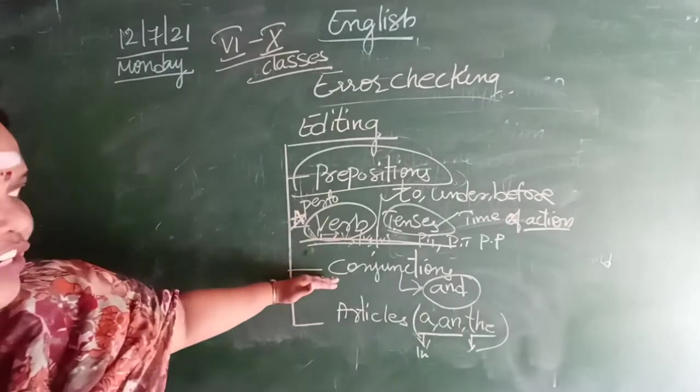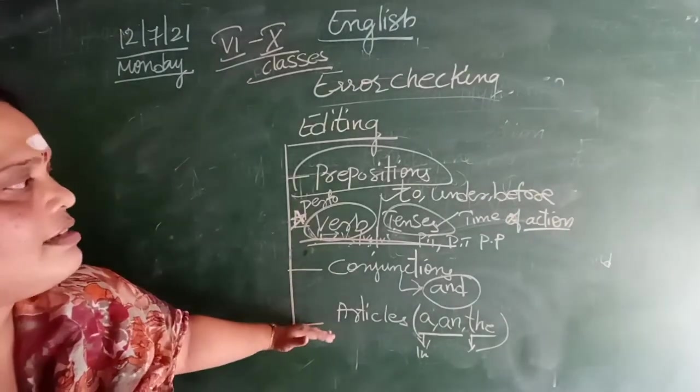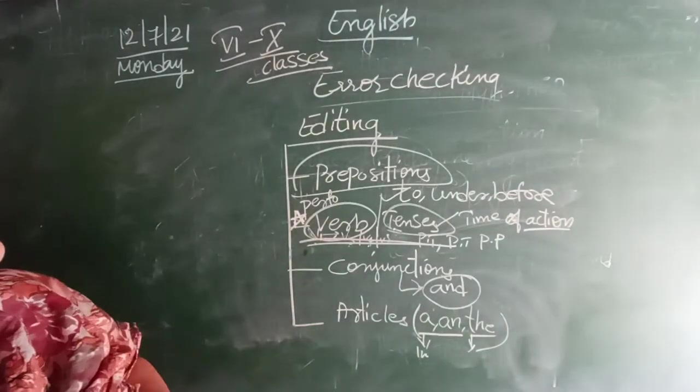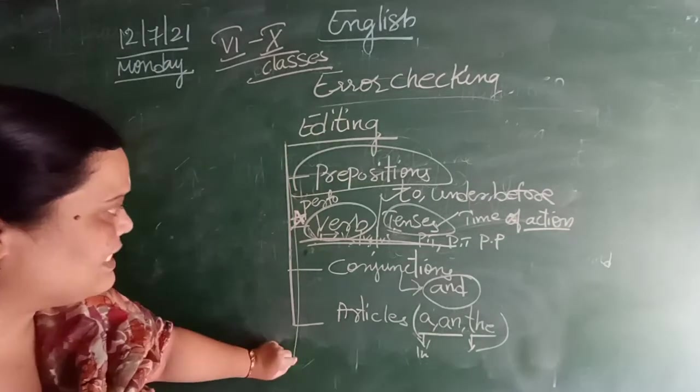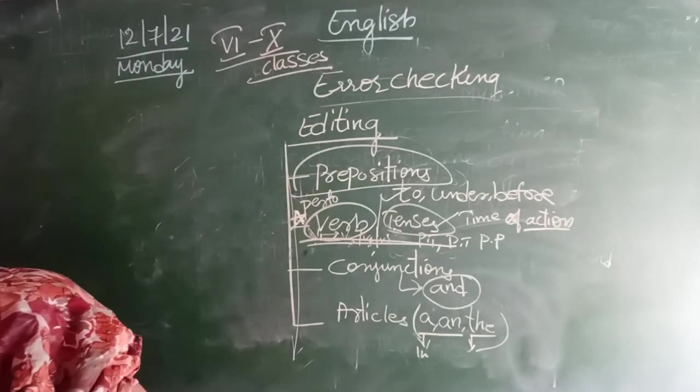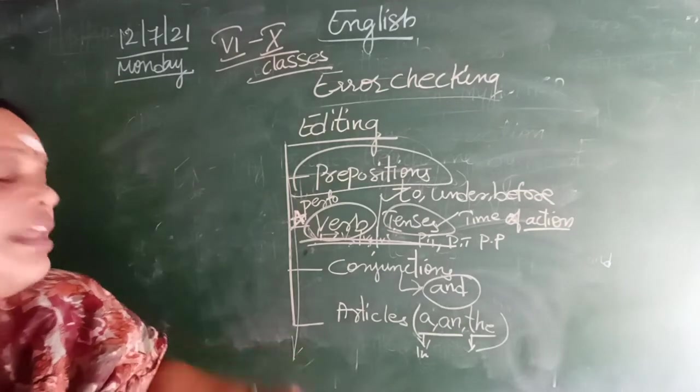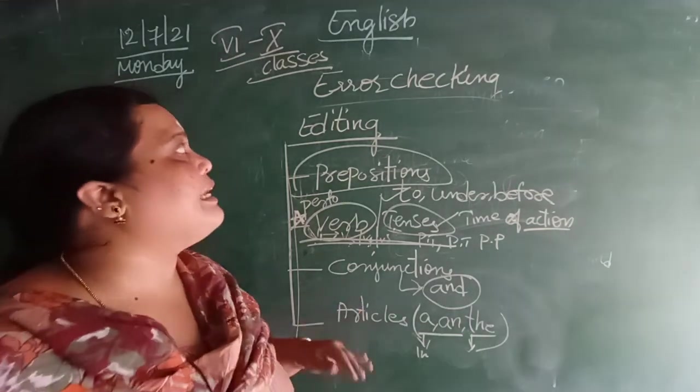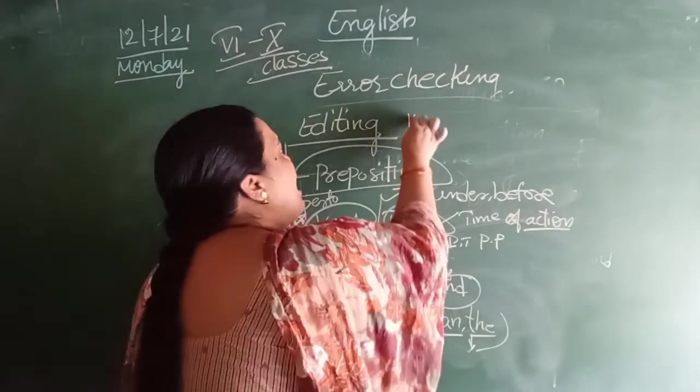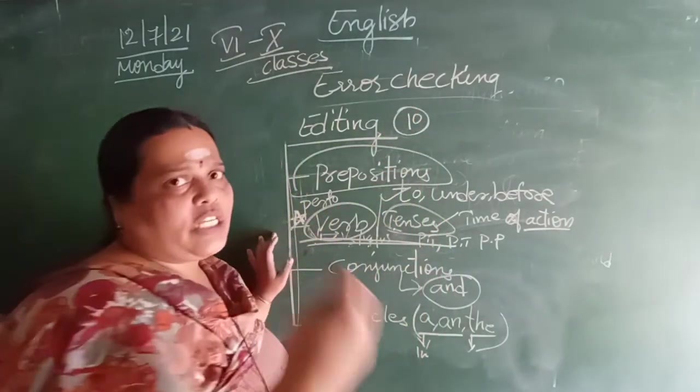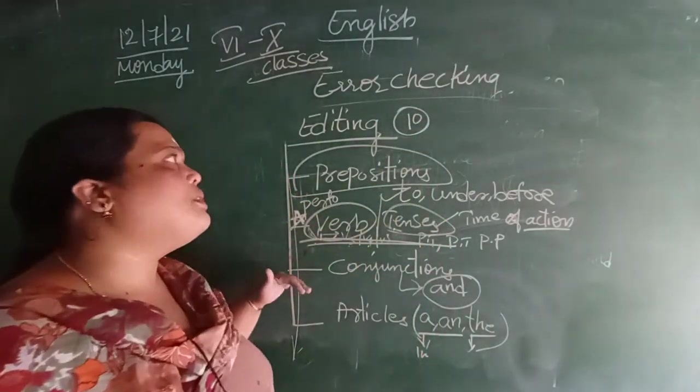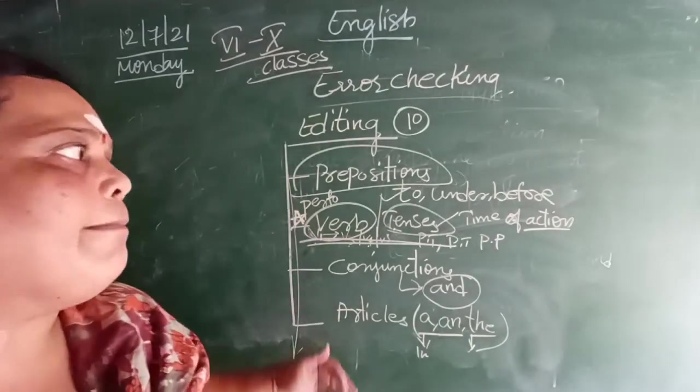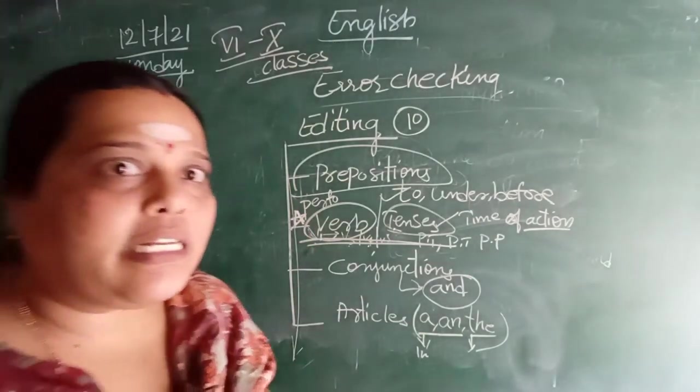Next we have to check for the conjunctions. Last is articles. If we can check all these things, then our editing is made very easy. Then in the next class, we will be learning rules. There are exactly some 10 rules how to edit or how to check that editing. So those rules we will be learning in part 2. Is that clear, children?